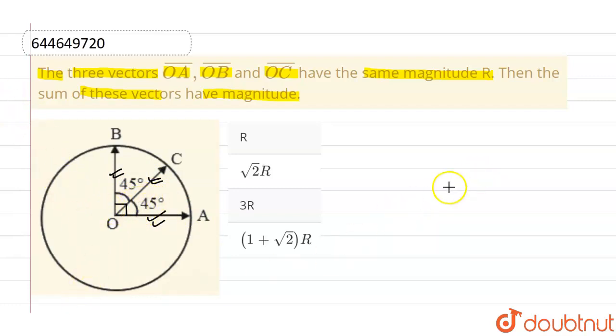Now let me reconstruct the vector diagram of these. Let's say this one is OA vector, this one is OB vector, and this one is OC vector. And angle between OA vector and OB vector is 90 degrees, and between OA vector and OC vector is 45 degrees.